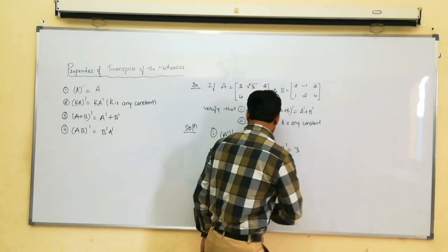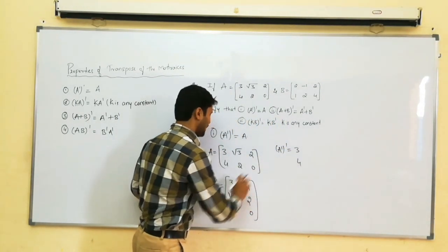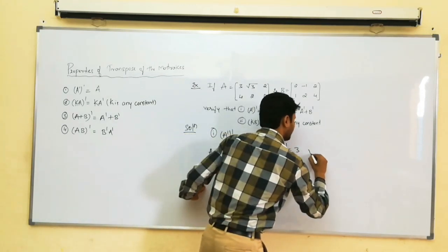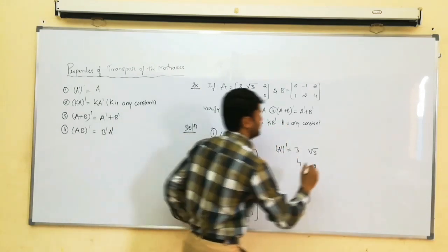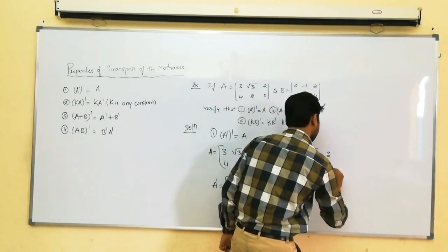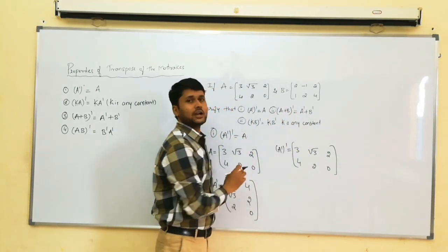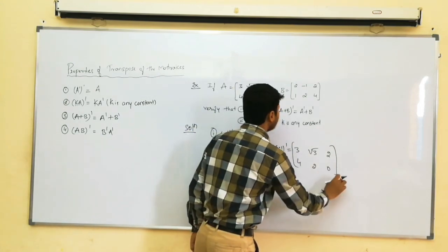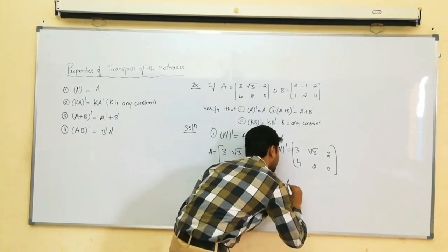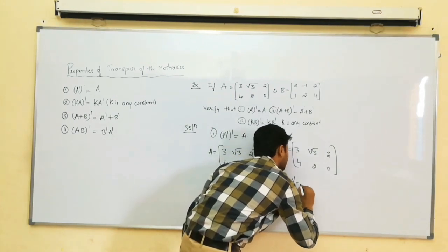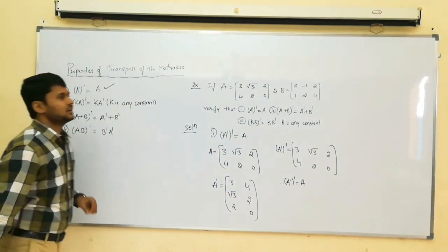Writing: 3, 4 as the first column; root 3, 2 as the second column; and 1, 2, 0 as the third column. This is A transpose whole transpose. This is nothing but the given matrix A. Therefore, A transpose whole transpose is equal to A. Therefore, our first property is verified correct.